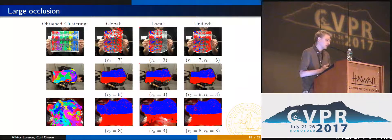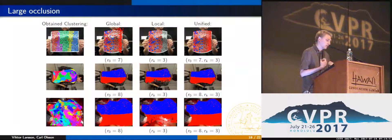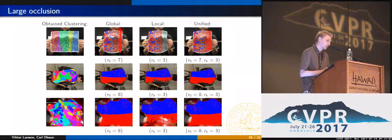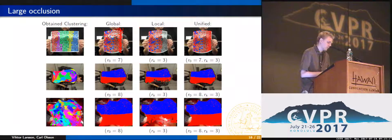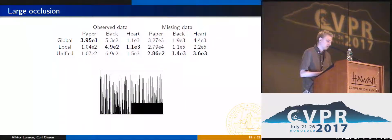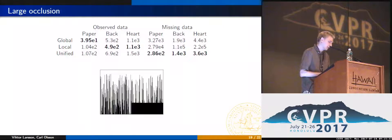Finally, we simulated large occlusion. One of the ideas was that the global rank constraint would allow us to handle occlusion very well. We took similar missing data patterns as before, but in the last 25% of the frames we occluded half of the image. Results on three sequences show that the global and unified model worked very well, as expected. When fitting local models, once a cluster is completely occluded it is no longer possible to recover it. Measuring error on the missing data, we get the best reconstruction with the unified model, while having a slightly higher error on observed data since we're fitting a more constrained model.